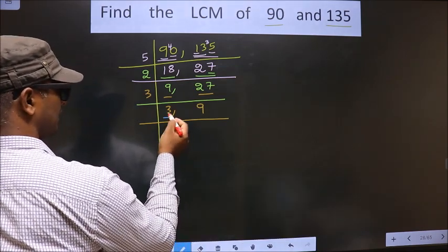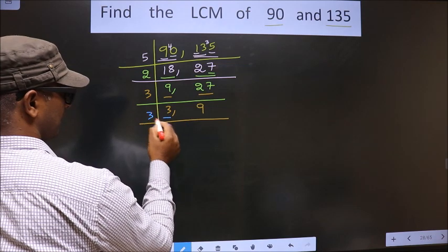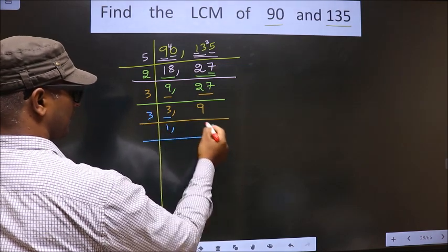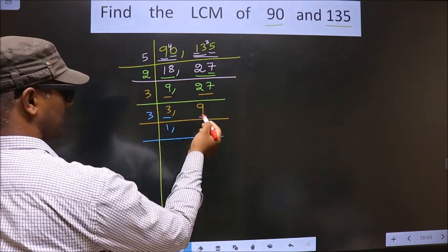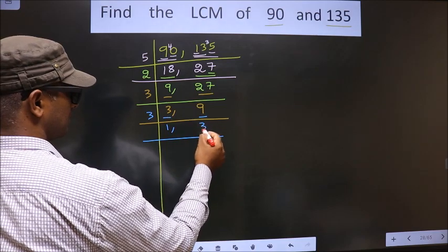Now here we have 3, which is a prime number, so we take 3 once 3. The other number is 9. When do we get 9 in the 3 table? 3 threes 9.